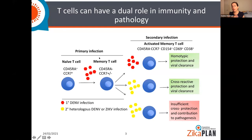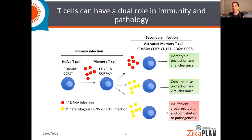So the question is what happens when you see the same virus again, or a virus that is closely related — assuming there's some cross-reactivity. There are different scenarios. If you see the same virus again — homotypic virus — you have protection and viral clearance. What happens if the secondary virus is a heterologous virus, like another dengue serotype or a Zika infection? You can either have cross-reactive protection and viral clearance, or you have insufficient cross-protection and contribution to pathogenesis.